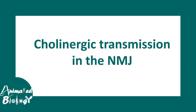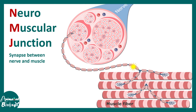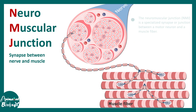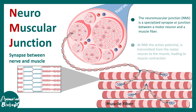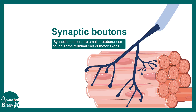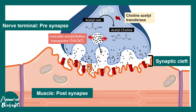Cholinergic neurotransmission is really important in the context of the neuromuscular junction (NMJ). In the neuromuscular junction, nerve terminals end in the muscle — the presynapse is the nerve and the postsynapse is the muscle. The synaptic boutons are zones where a presynaptic motor nerve terminal meets a particular muscle. The process of making acetylcholine at the NMJ is very similar to what we have seen in the brain.